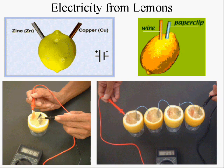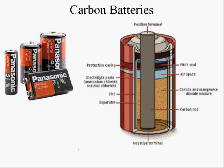You can make electricity from anything with acid or base in it. A lemon works great — putting a piece of zinc and copper in a lemon makes a little battery. In fact, you can connect them in series to get different voltages. Here we see several lemons connected together, producing about three and a half volts.